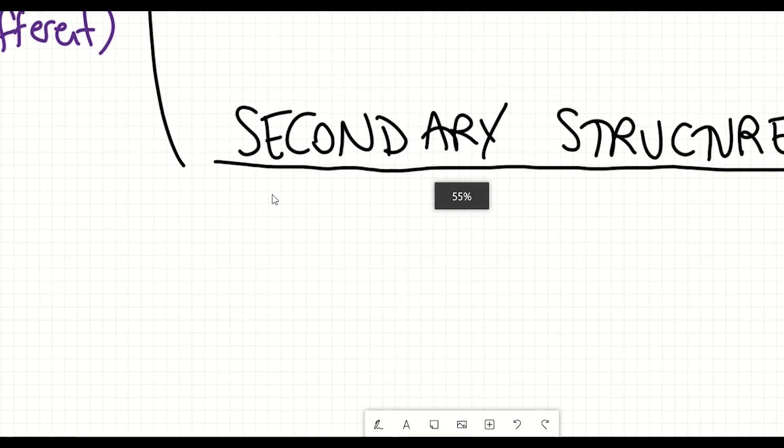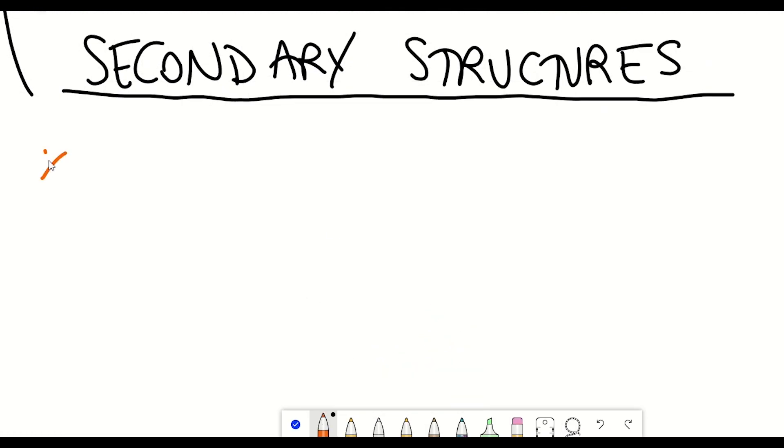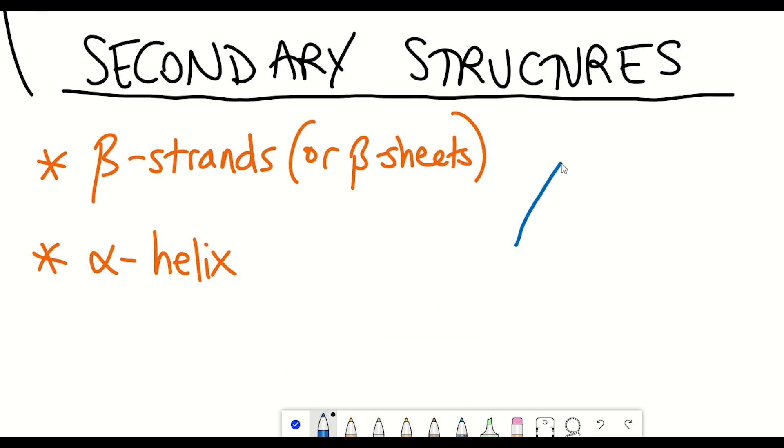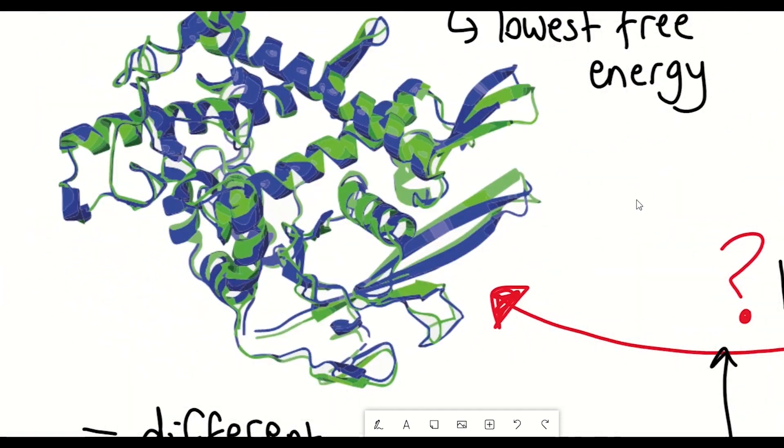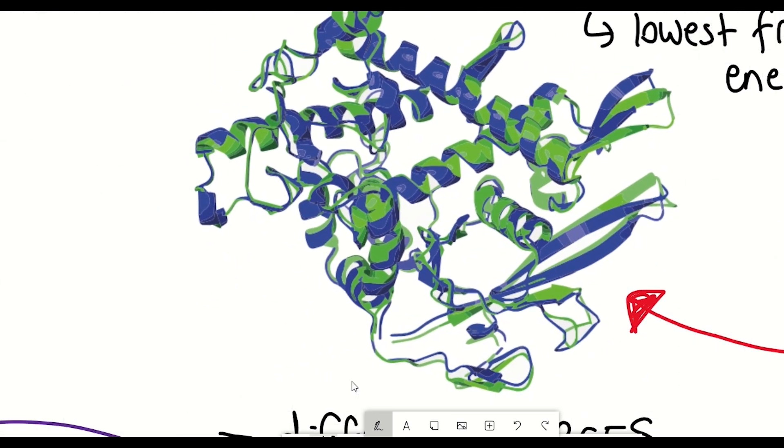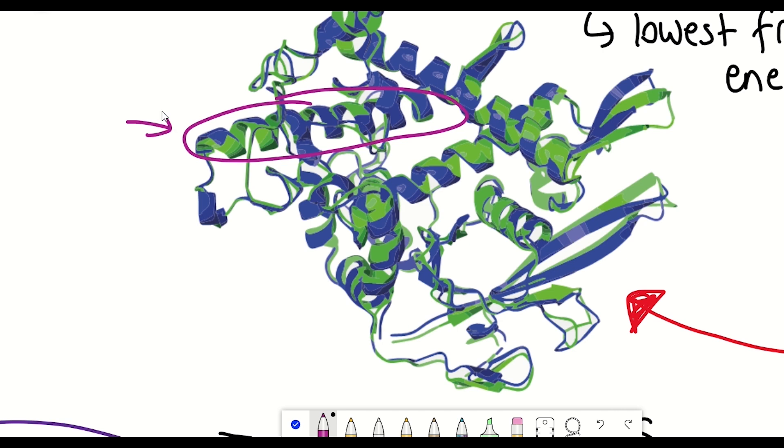The two main secondary structures are beta strands and alpha helices. And it's understood that the series of different strands and helices within the secondary structure make up the tertiary structure. So actually, if we take a closer look at this tertiary structure here, we can actually see that it's made up of these different helices, these alpha helices and these different beta strands, the ones that look like arrows.